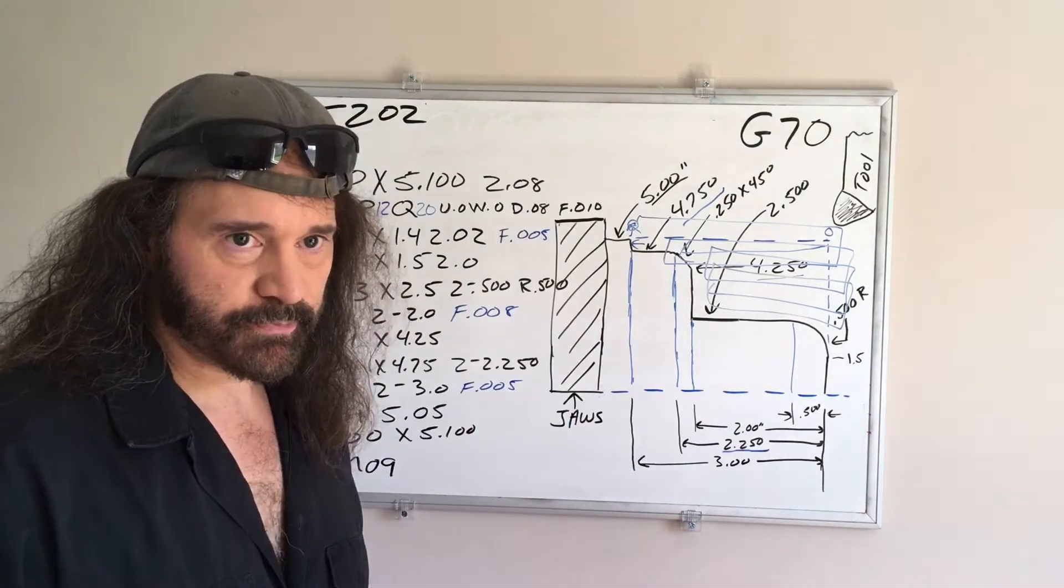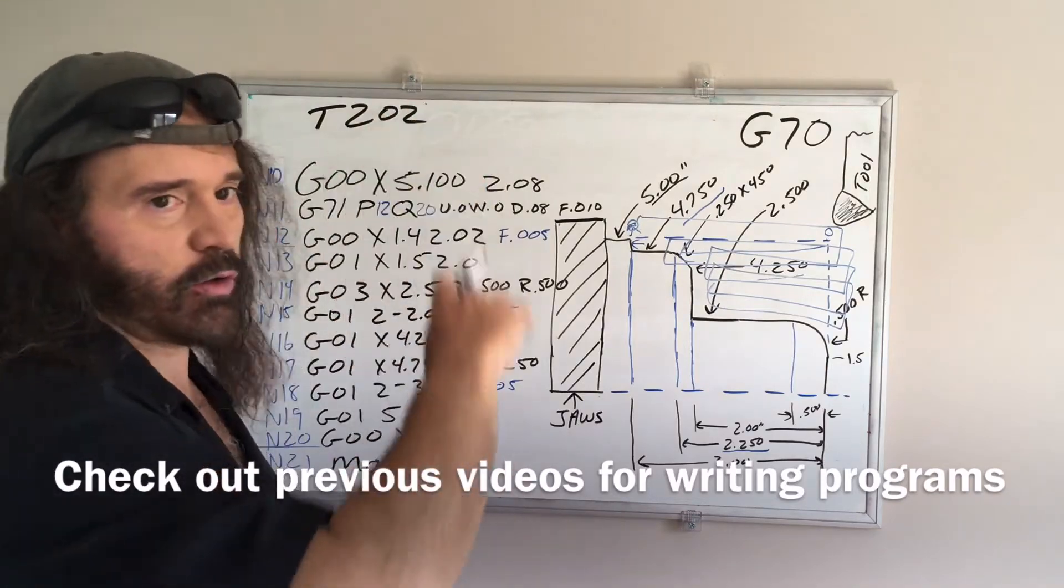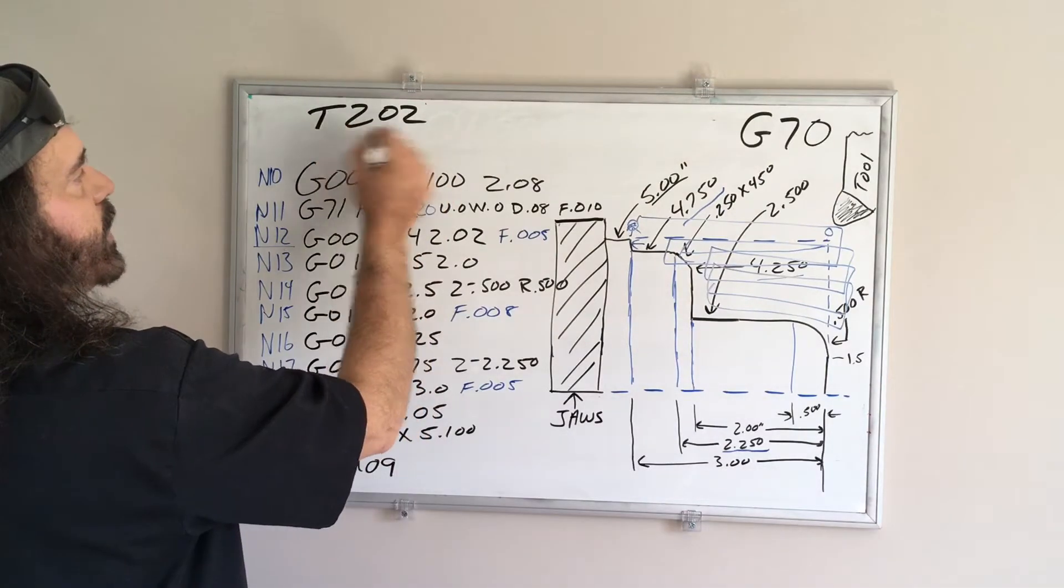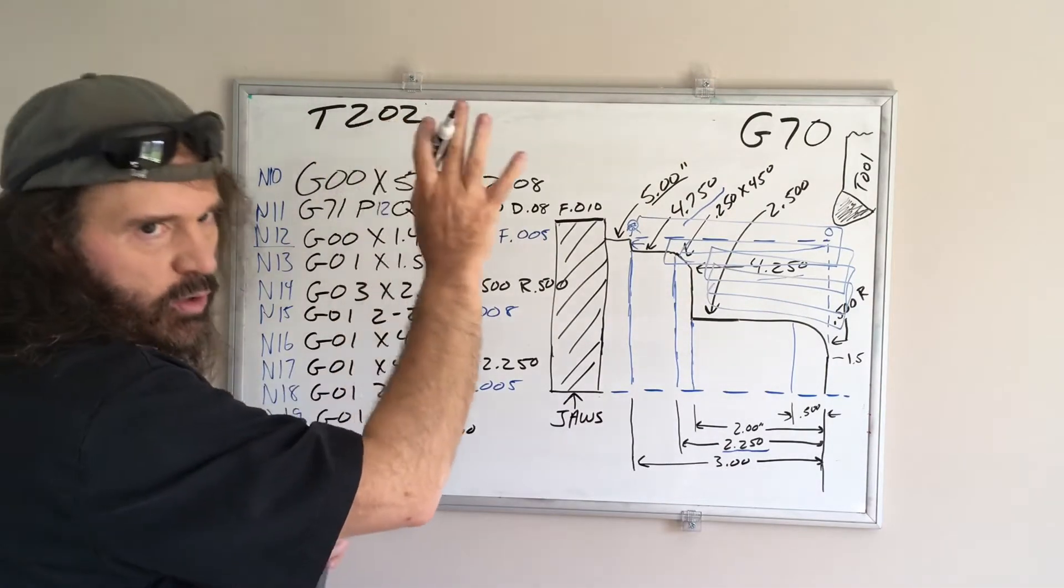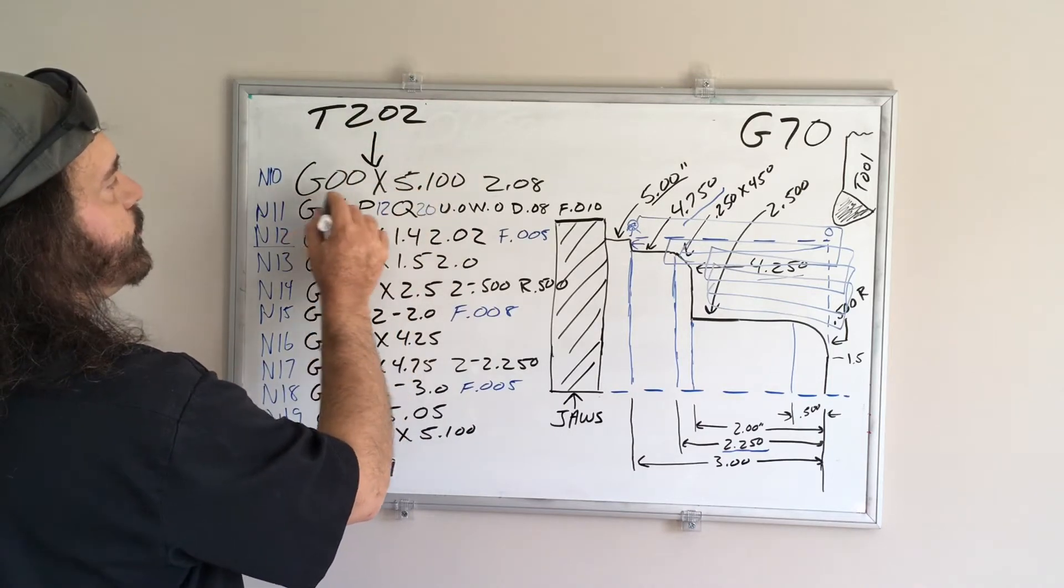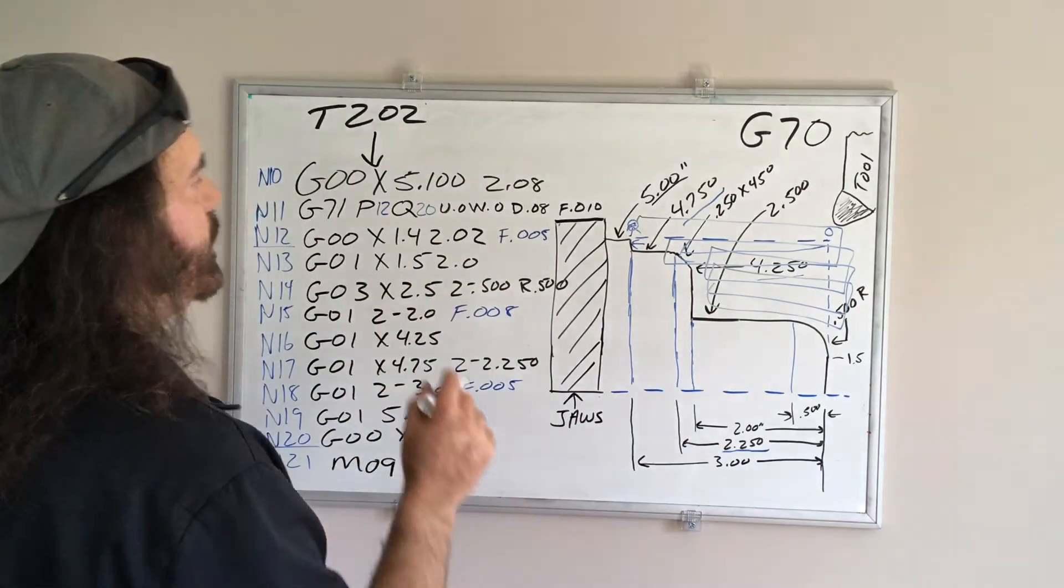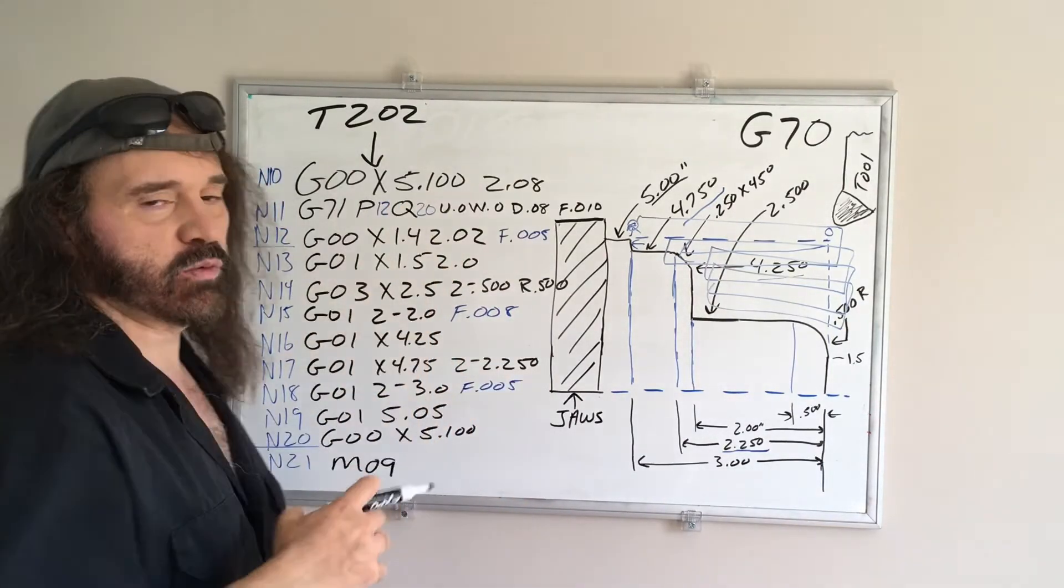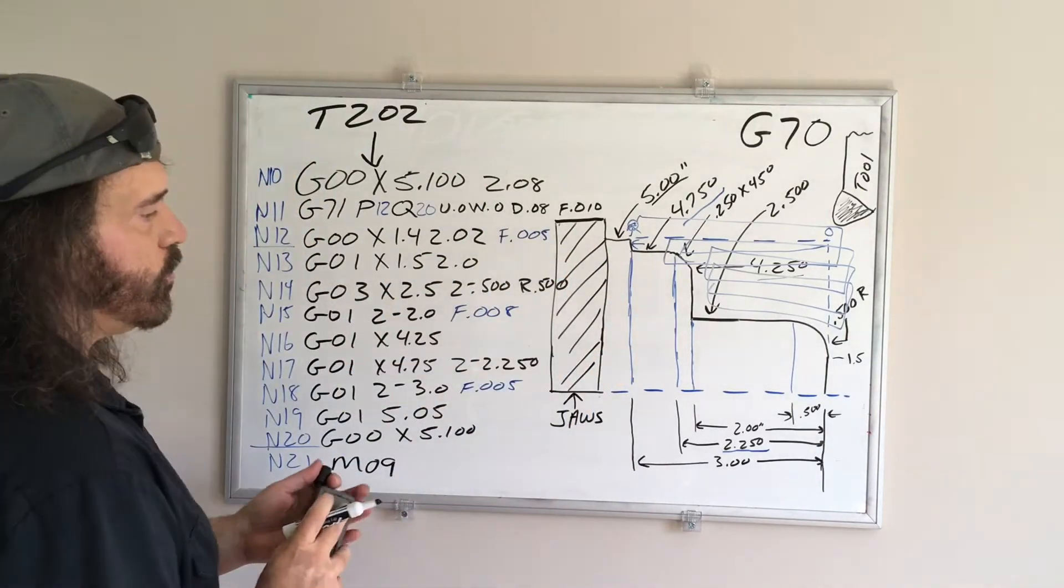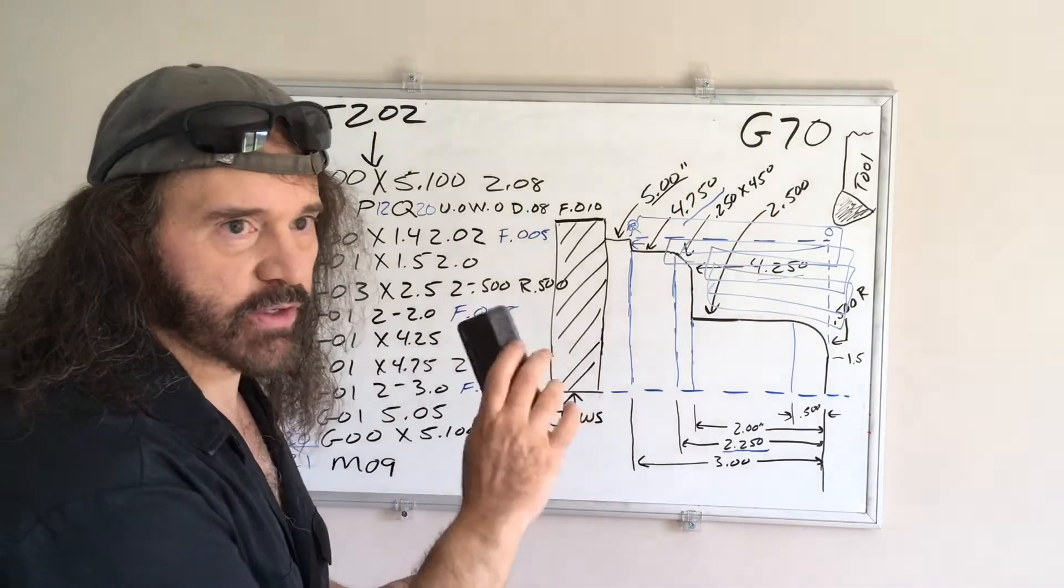And then from there you write your spindle speed and all that stuff, and I'm not going to go through all that in here. So say you got your spindle speeds and everything already written, then you're going to rapid to this dimension. Everyone following me? You're going to rapid to that dimension that we had in the other video.